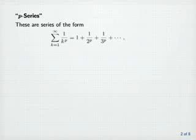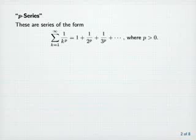P-series. These are series of the form the sum from k equals 1 to infinity of 1 over k to the pth power, which equals 1 plus 1 over 2 to the p plus 1 over 3 to the p, and so on, where p is positive.